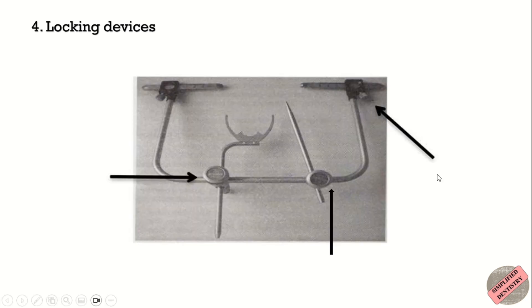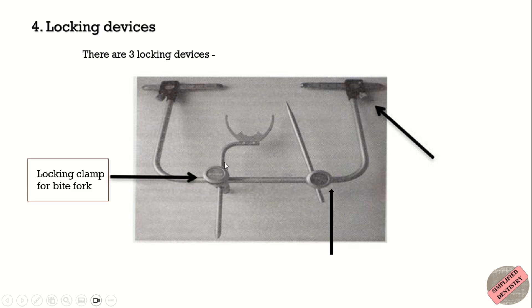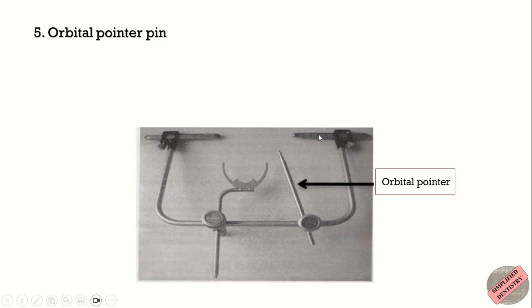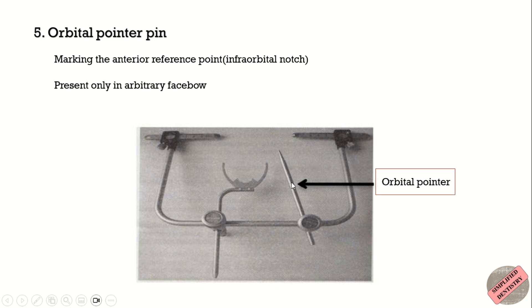There are three locking devices: one is the locking clamp for the bite fork, which attaches the bite fork to the U-shaped frame; another is the locking clamp for the orbital pointer pin, which locks the orbital pin onto the U-shaped rod; and there is also a locking screw for the condylar rods. The orbital pointer pin helps in marking the anterior reference point, that is the infra-orbital notch, and it is present only in the arbitrary face bow.